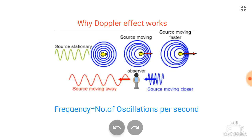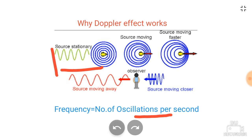Now we will see why the Doppler effect works. The frequency of a wave is equal to the number of oscillations per second. Let us take a source which is stationary — the number of oscillations per second will be a fixed value. As this source starts to move closer to a stationary observer, the number of oscillations per second will increase.